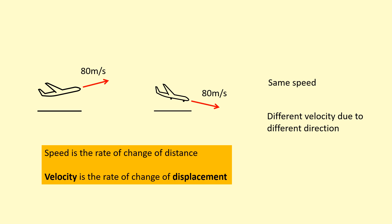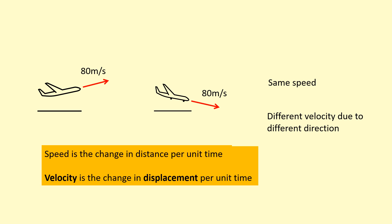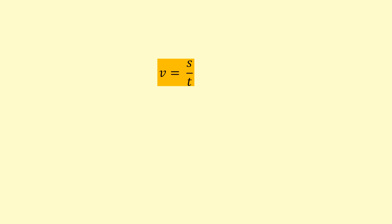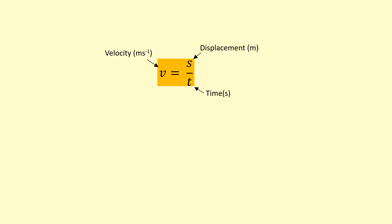Displacement is a vector, and so is velocity — they both have directions. Instead of writing 'rate of change,' you can write 'per unit time.' So speed can be defined as change in distance per unit time. This leads to the equation for speed or velocity: v = s/t, measured in meters per second. Notice the index notation ms⁻¹, which is the same as writing m/s. Here, s stands for displacement in meters and t for time in seconds.